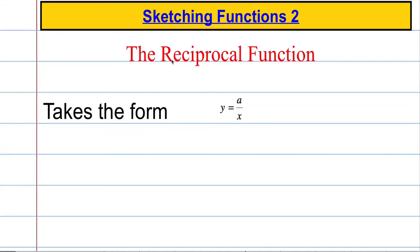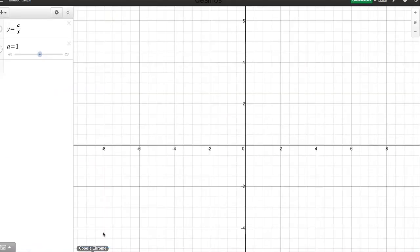So what is the reciprocal function? Well, it takes the form y equals some number A divided by x, where A is any number at all. For the majority of this video I'm going to be using Desmos to demonstrate various different graphs. So let's take a look and see what the reciprocal function looks like. I've typed in y equals A over x, and I've just started by setting the value of A equal to 1, so y equals 1 over x.